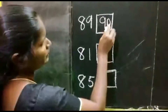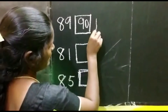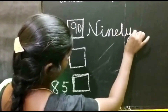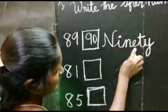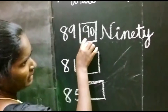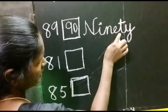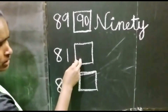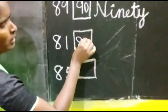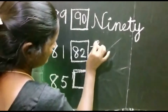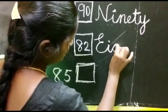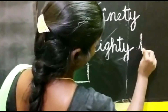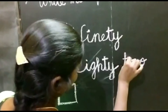89 after number is 90. What's spelling for 90? N-I-N-E-T-Y. 90. 81 after number. 82. What's spelling for 82? E-I-G-H-T-Y. 82. T-W-O. 82.